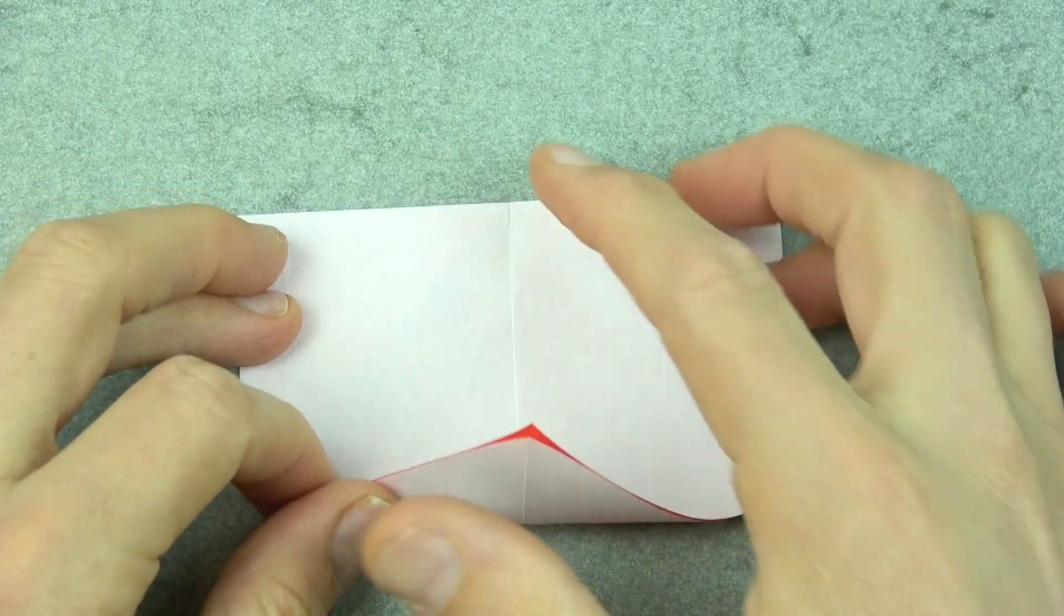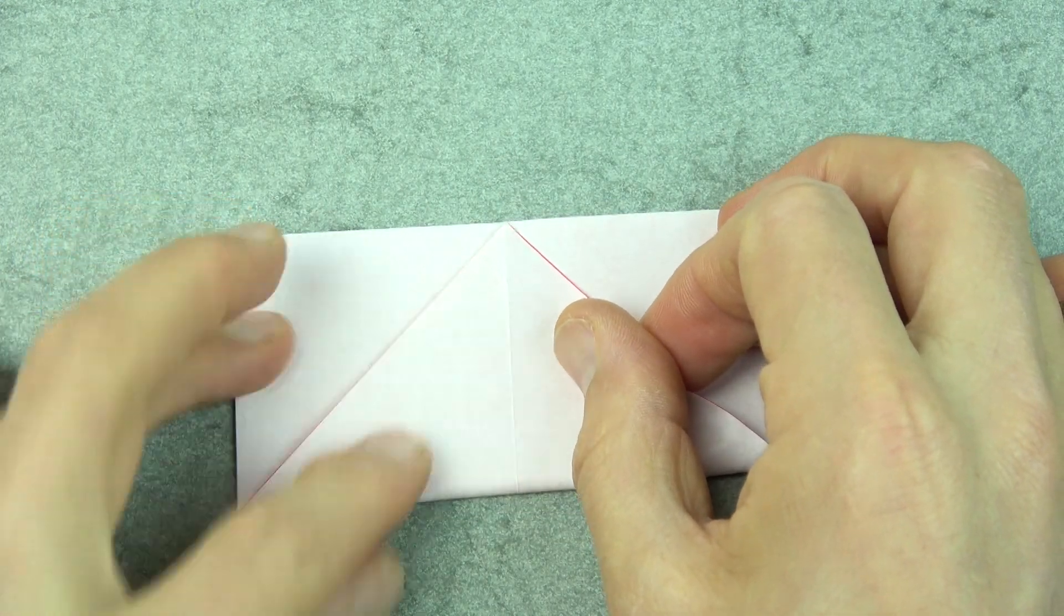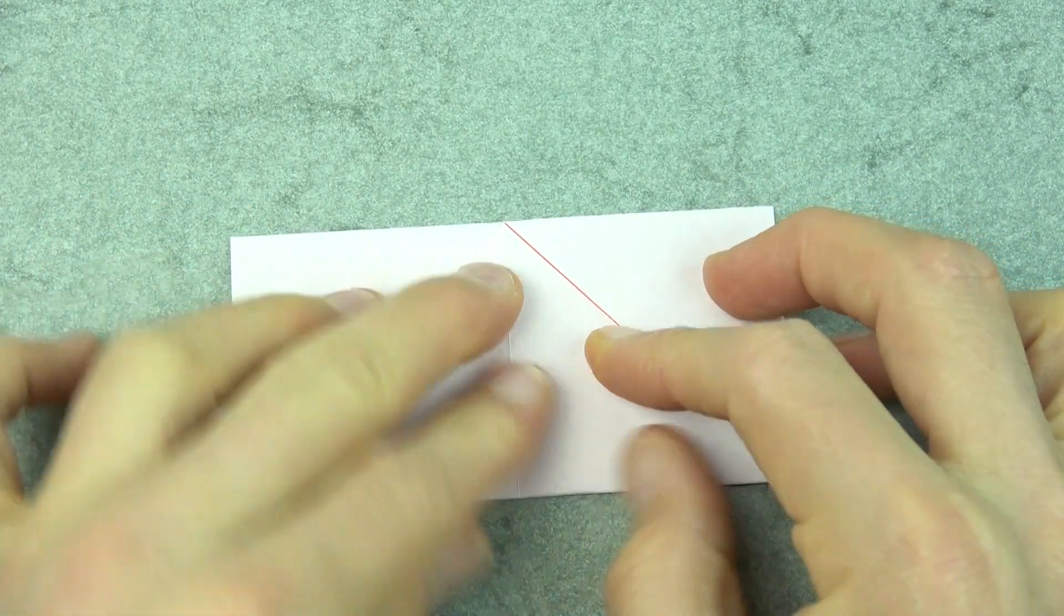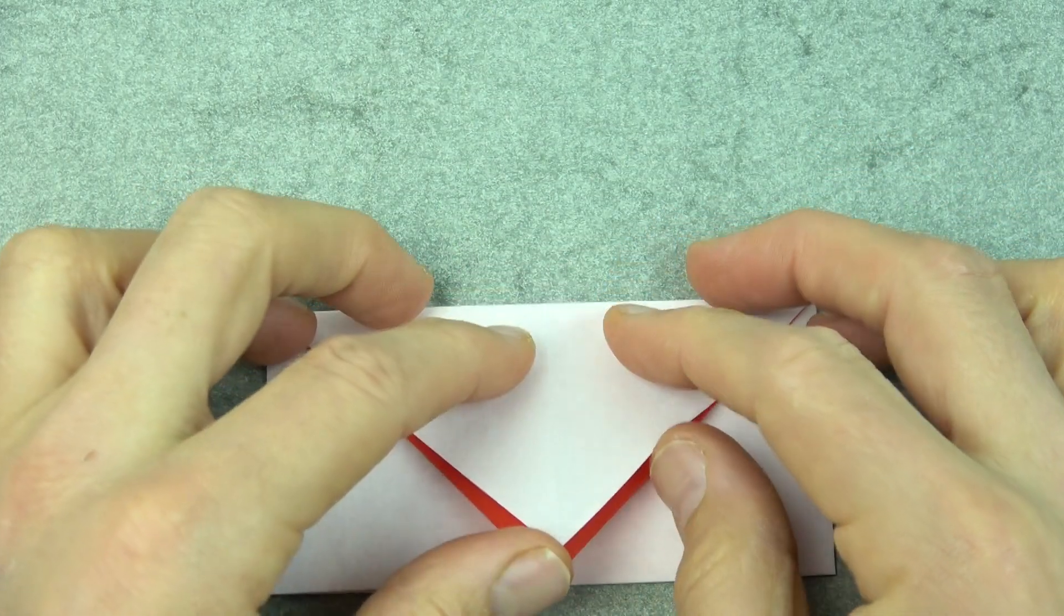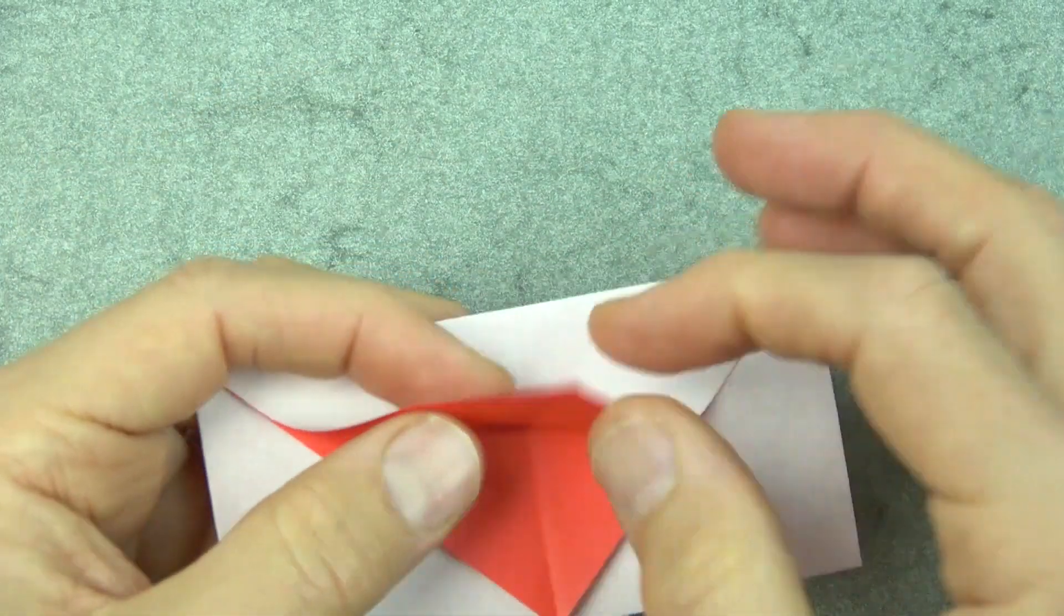Now fold these two corners to this point. And rotate and now we're going to fold this flap into thirds.